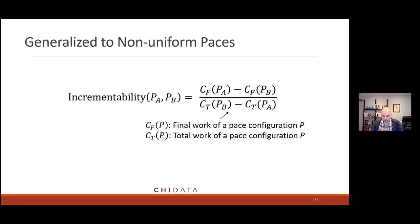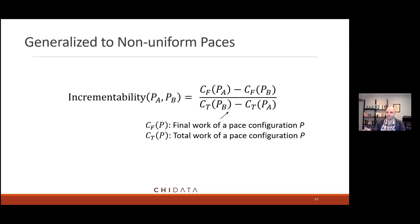This is a fun research anecdote: when we set out on this work, we thought we could define a clean property like monotonicity — is the query monotonic or not? Nice, clean, everyone gets it. But then you realize that doesn't work because of data arrival rates and all these weird curves that happen. We beat our heads against the wall, and this is the end definition we settled on for incrementability. It's not as elegant, but we feel it works pretty well.